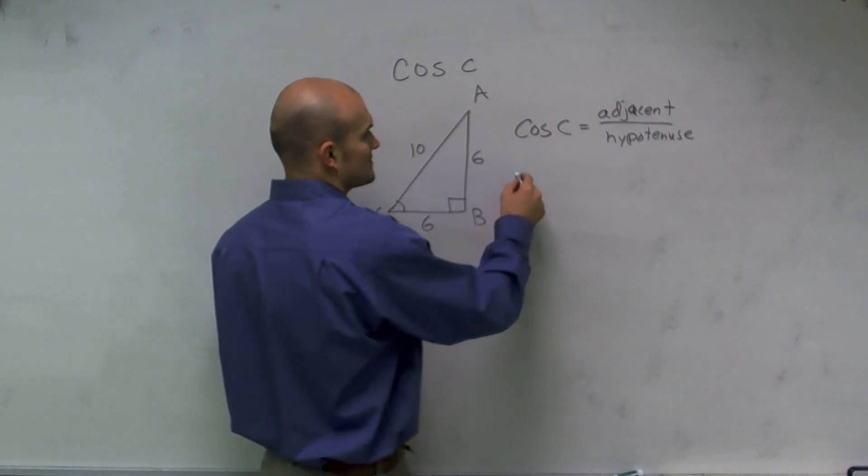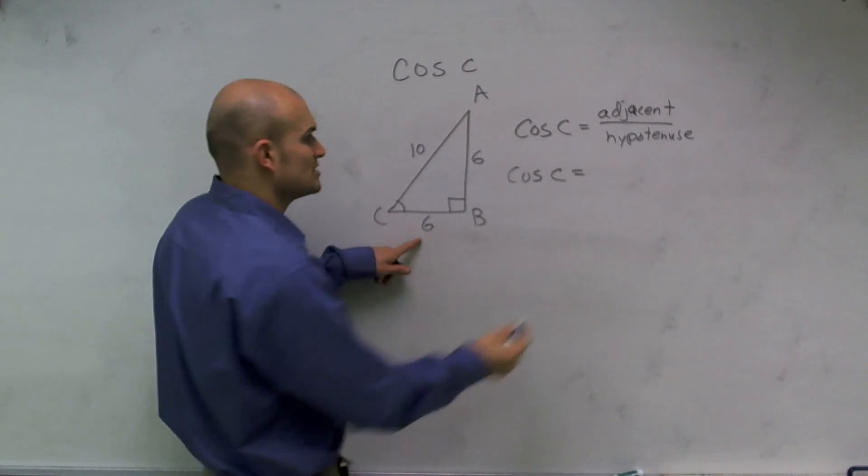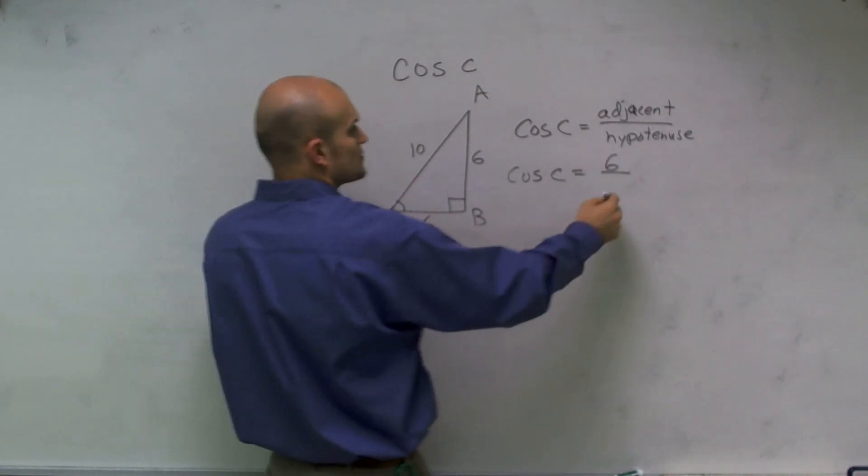So to find the cosine of C, all I'm going to do is I'm going to set up the ratio of my adjacent side, which is 6, over my hypotenuse, which is 10.